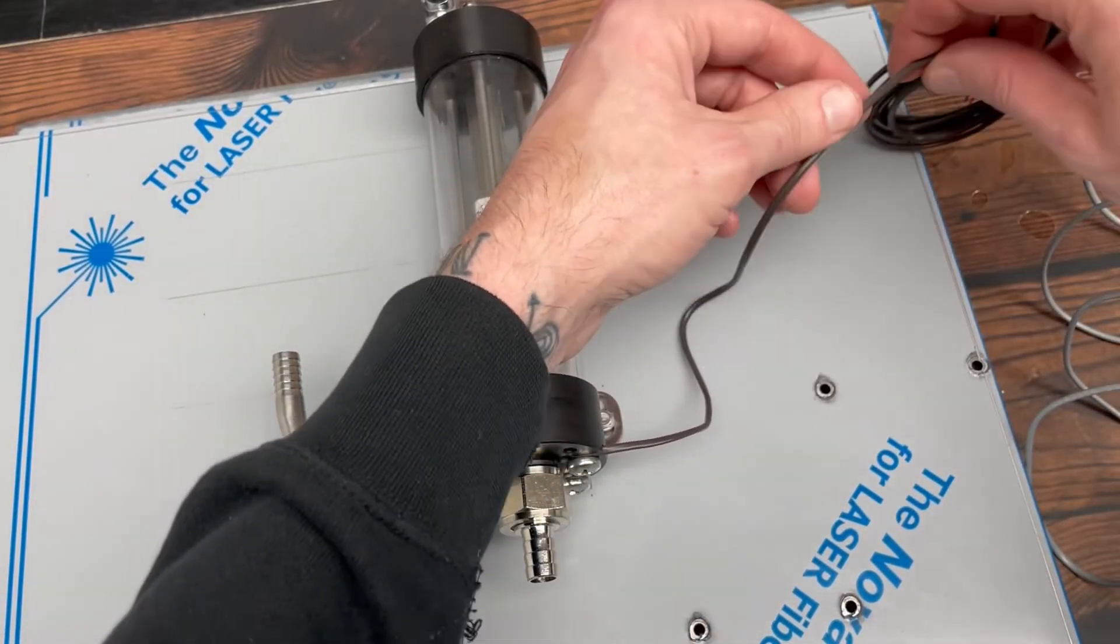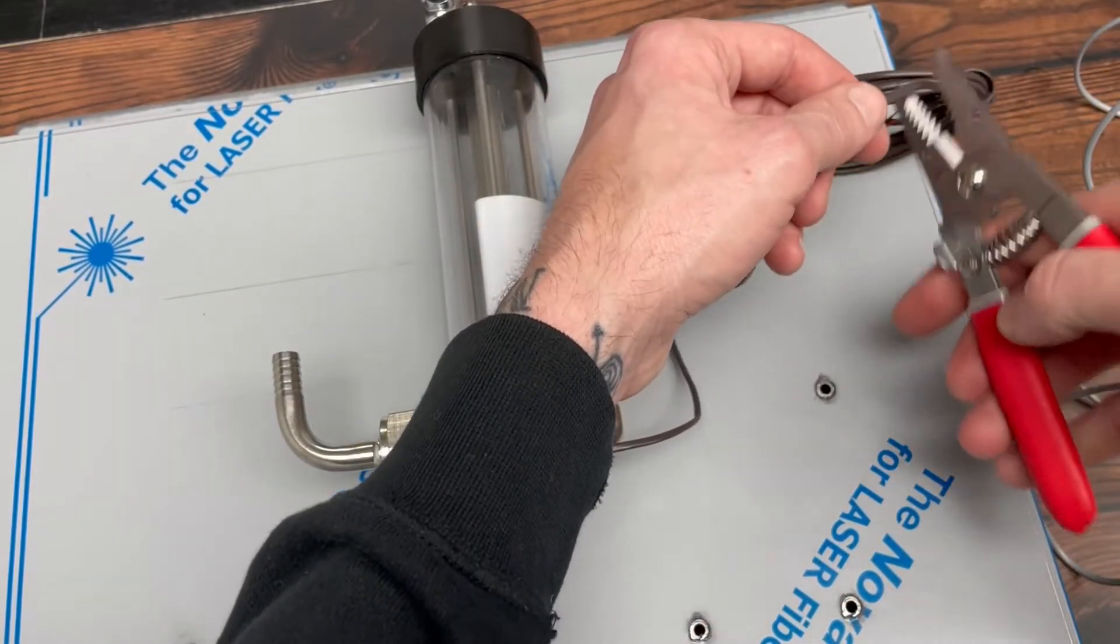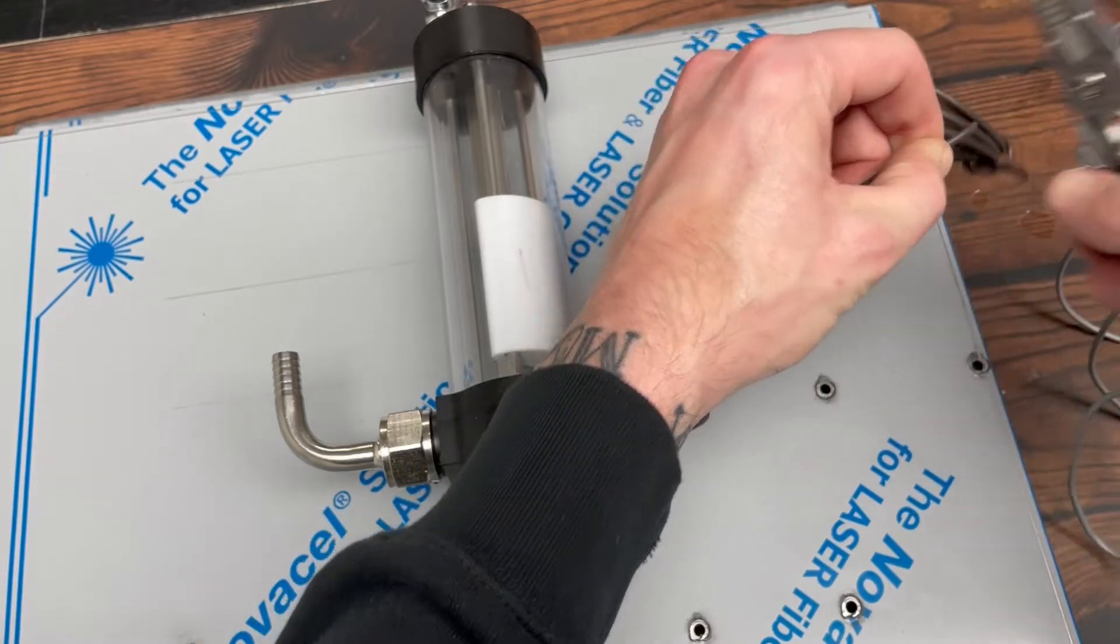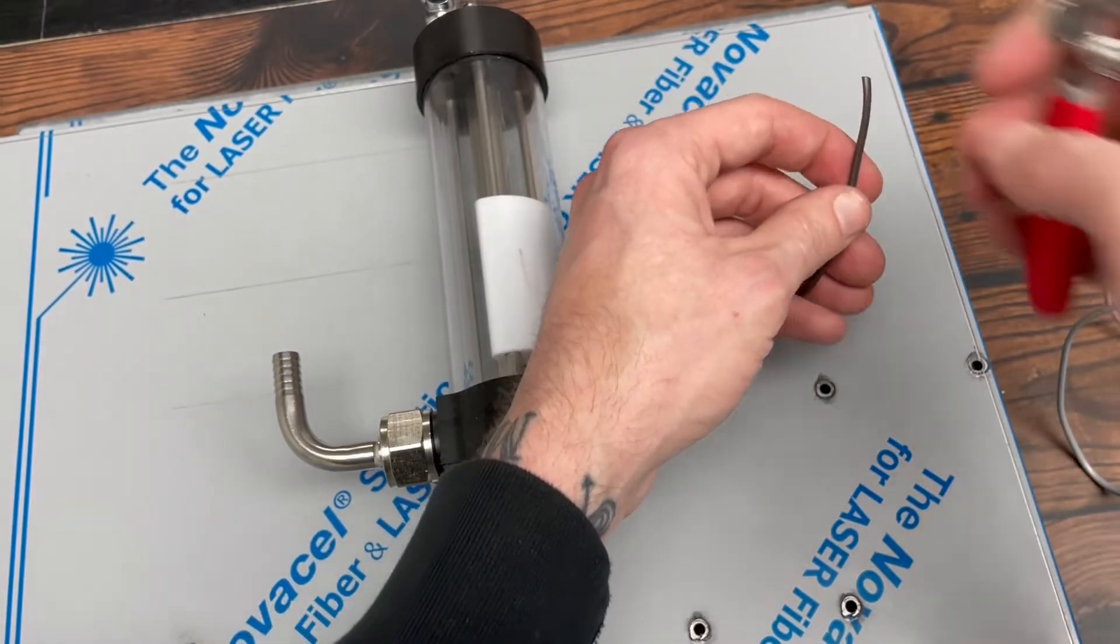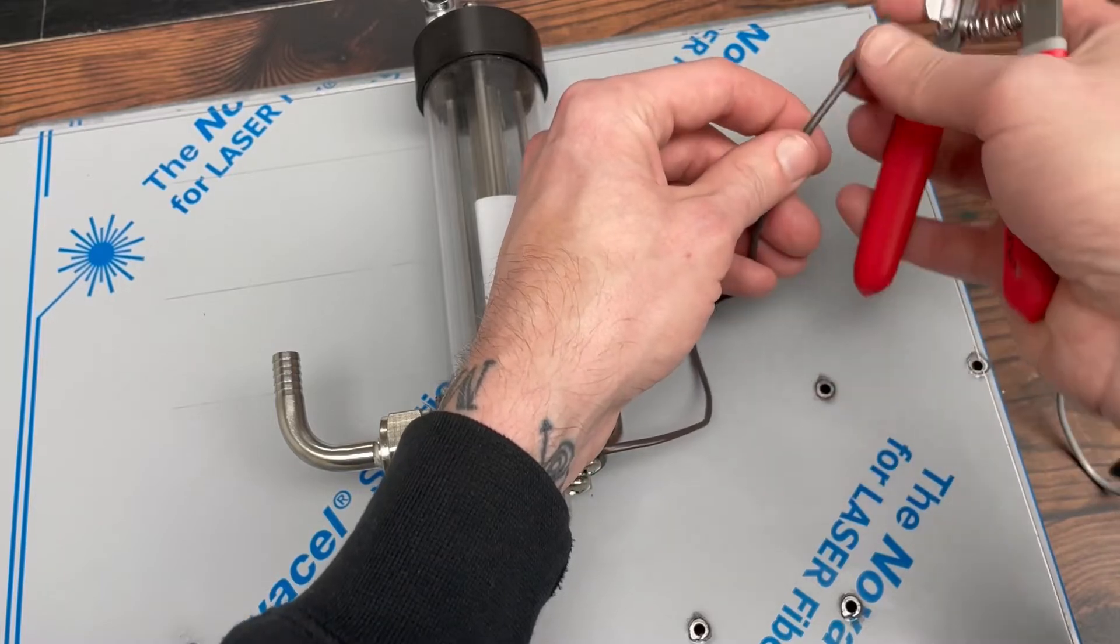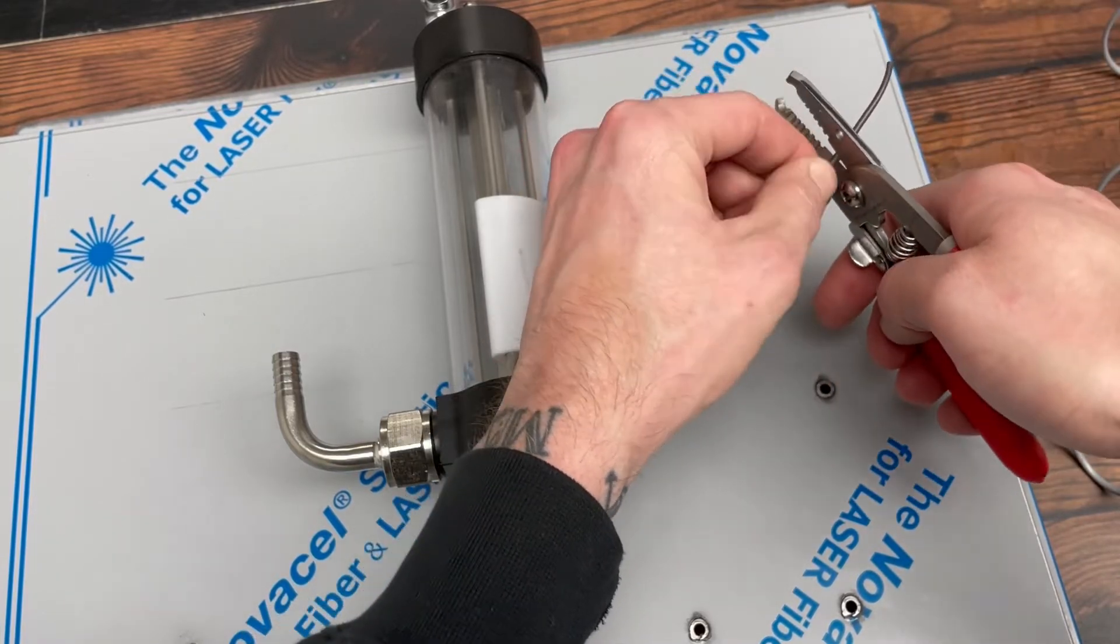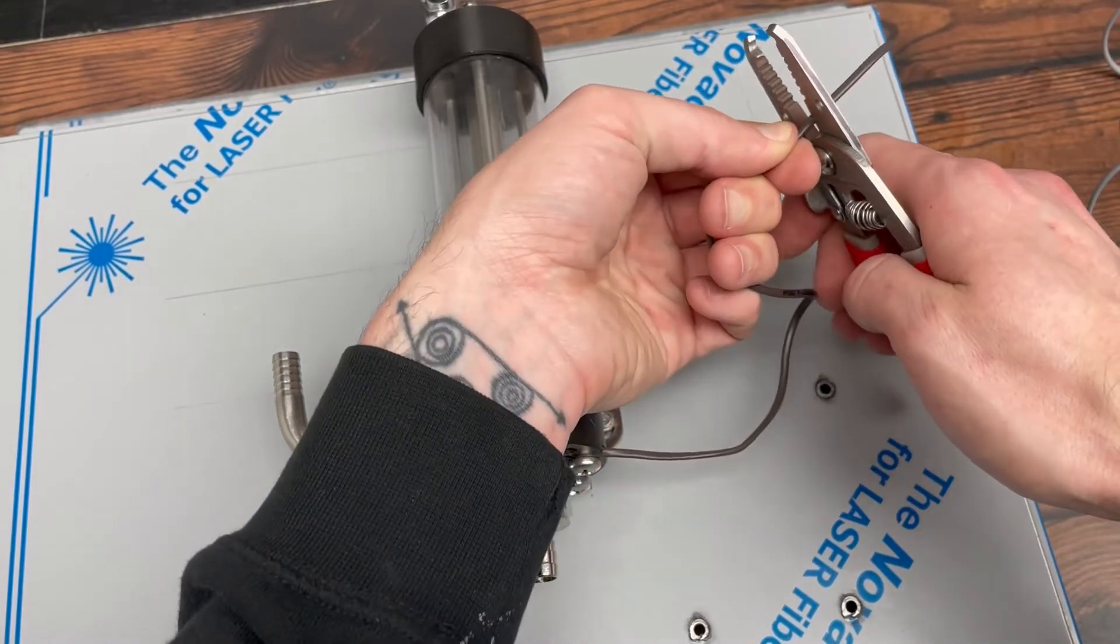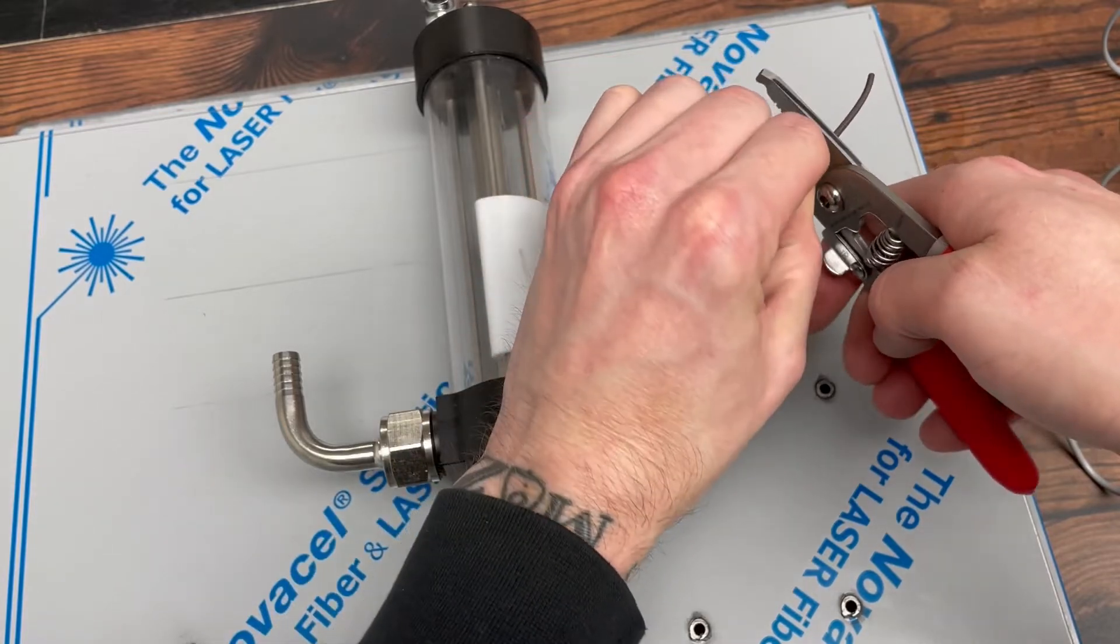So I always leave some extra slack too on the old one, because you can always kind of tuck it away. You don't want to run out or be too short. So I'll do about the same on this one, just very gently.